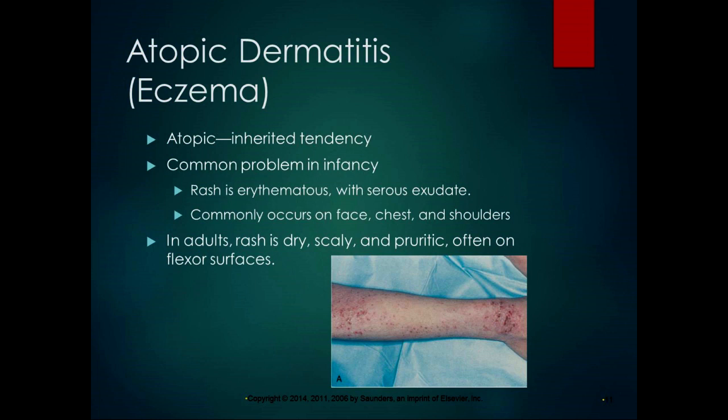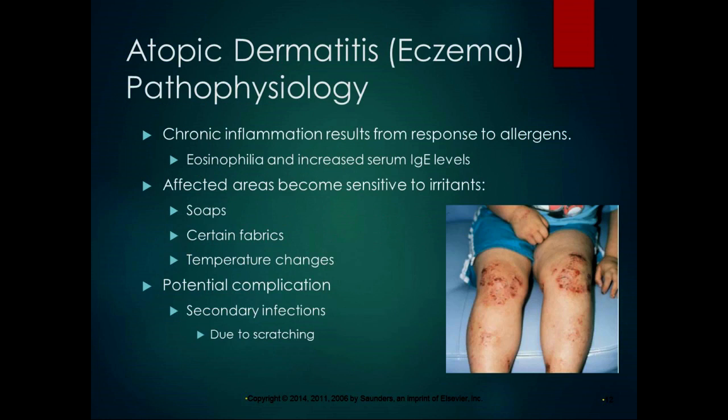Atopic dermatitis, also known as eczema, is an inherited tendency and a common problem in infants, presenting as a red rash with serous (clear) exudate commonly on the face, chest, and shoulders. In adults, the rash is dry, scaly, and pruritic, often on the flexor surfaces of the arms. Eczema is chronic inflammation resulting from response to allergens, showing increased eosinophils and elevated serum IgE levels on differential white blood cell counts.